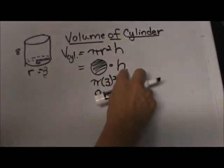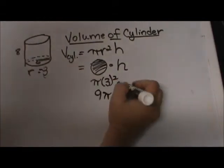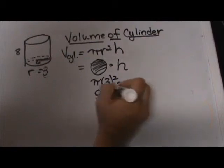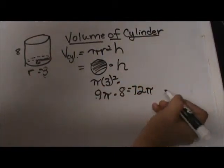Now I just need to multiply it times the height, and the height is 8, so 9 times 8 is 72, and then we just stick a pi next to it, so that would be my volume.